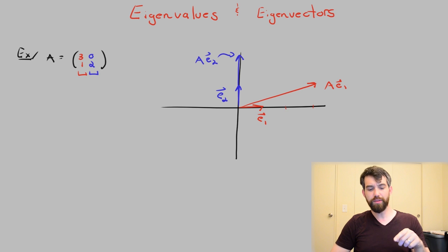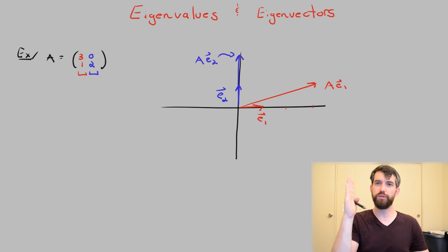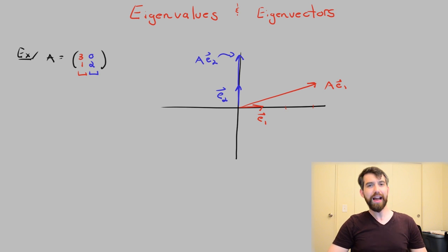However, if I look at E₂, so E₂ sitting straight up, or a multiple of E₂, what happens to it? It turns into another multiple of E₂. A vector whose line is on the y-axis, some multiple of E₂, just becomes some other multiple of E₂.